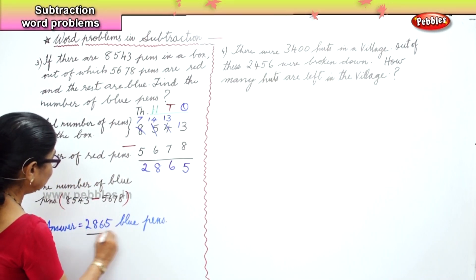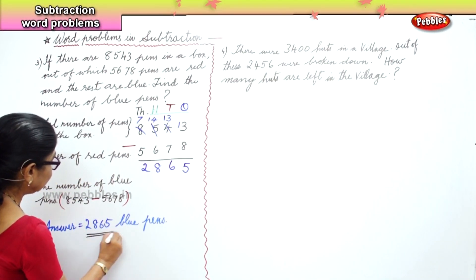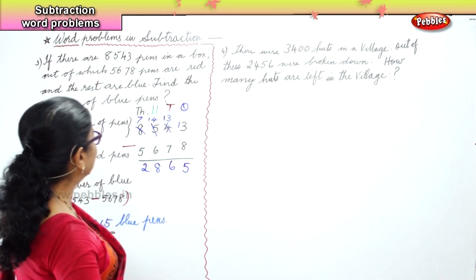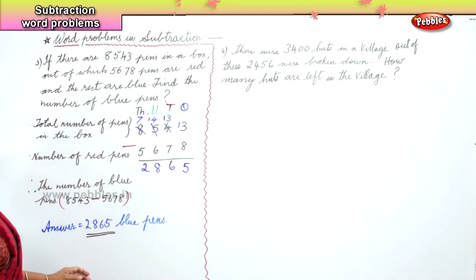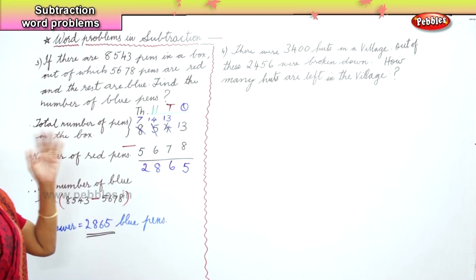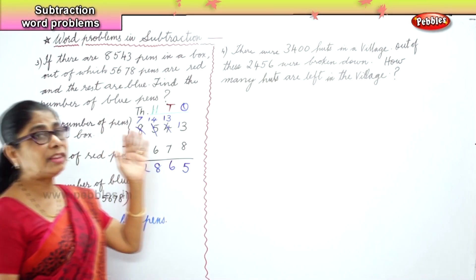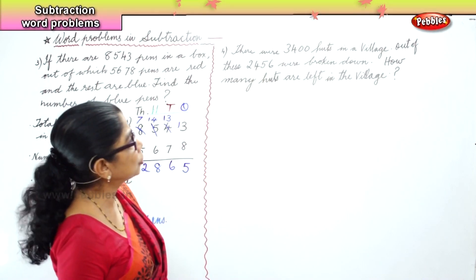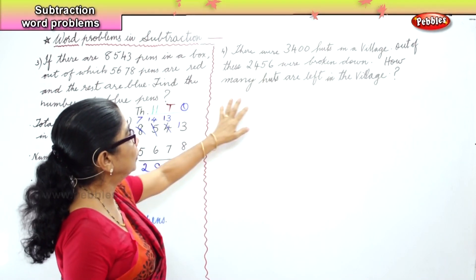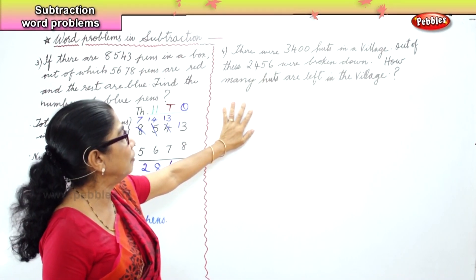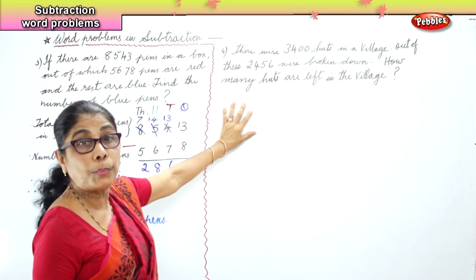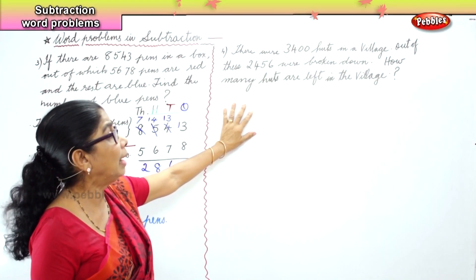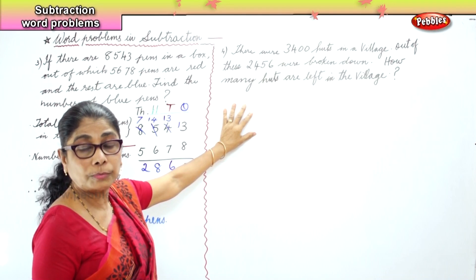Now we go on to the next problem. There were three thousand four hundred hearts in a village. Out of these, two thousand four hundred and fifty-six were broken down. The question is: how many hearts are left in the village?